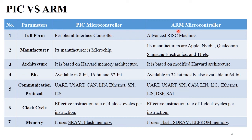Here is the difference between PIC microcontroller and ARM microcontroller. We already discussed PIC microcontroller architecture, pin description, and everything about PIC microcontroller in the last session. Now there is a difference between these microcontrollers parameter-wise. The full form of PIC microcontroller is Peripheral Interface Controller, and the full form of ARM is Advanced RISC Machine.